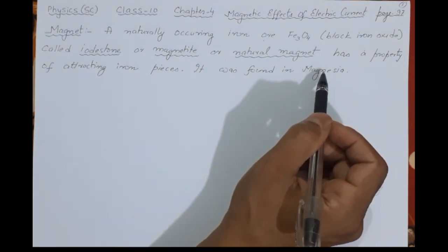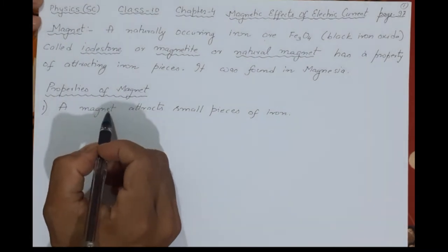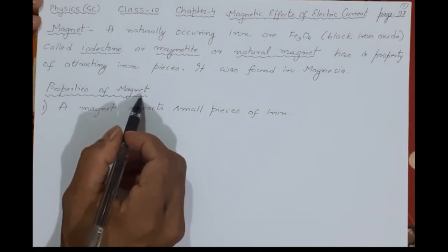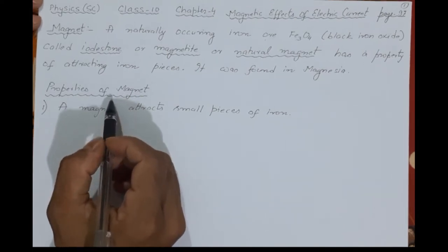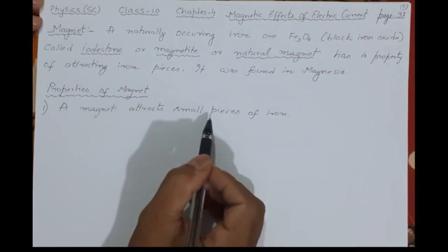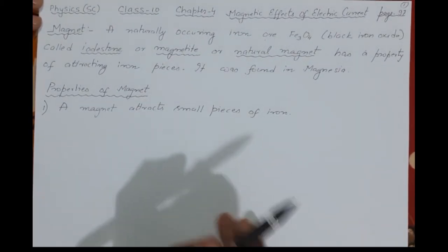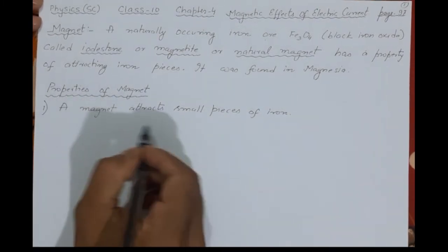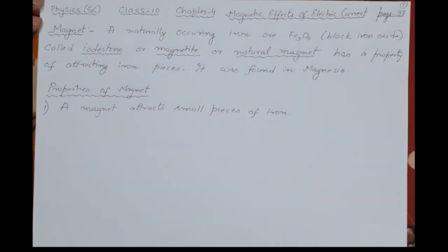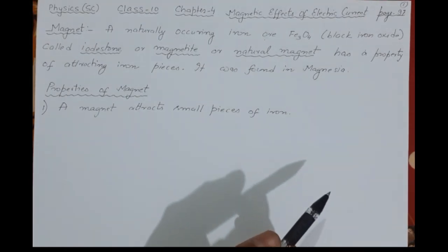Now let's look at the properties of a magnet. The first and most common property is that a magnet attracts small pieces of iron. Even if you have not studied this in school, you can easily write this as the first property of a magnet.